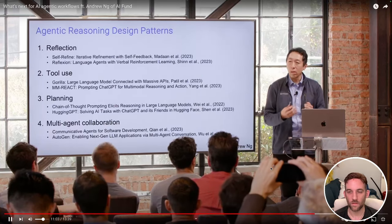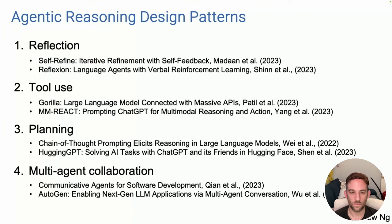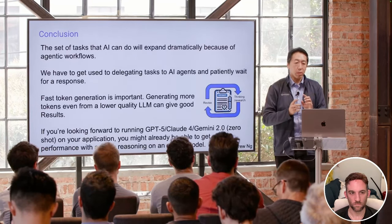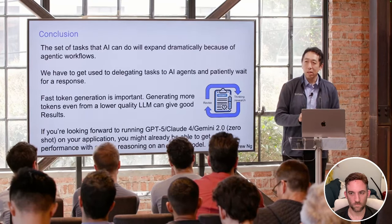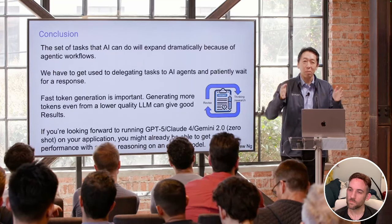These design patterns can give a quick productivity boost, and agentic reasoning patterns are going to be important. Andrew Ng expects the set of tasks AI can do will expand dramatically this year because of agentic workflows. One thing that's difficult for people to get used to: when we prompt an LLM, we want an immediate response. A decade ago at Google there were discussions about 'big box' search — one reason it didn't get pushed successfully was because when you do a web search, you want a response in half a second.